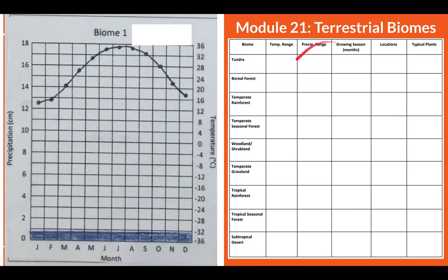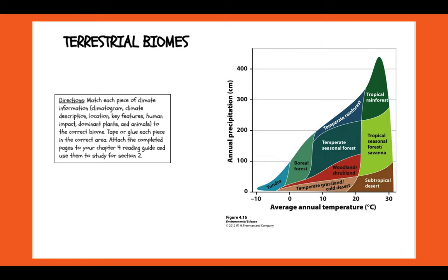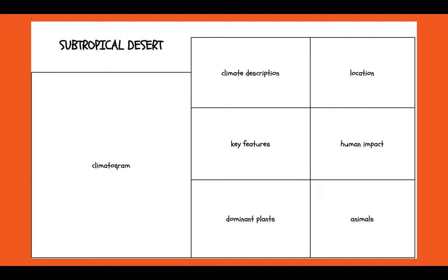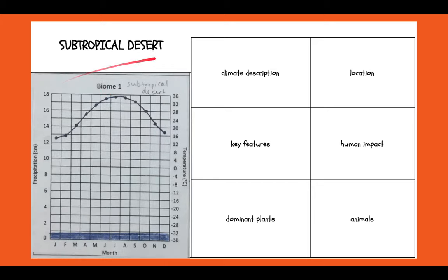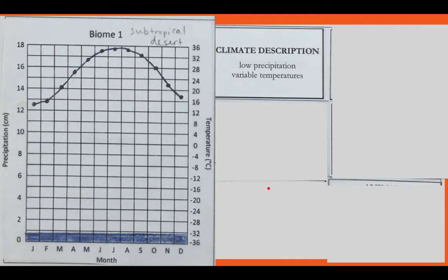So taking your climograph from biome one, as well as your data from module 21, terrestrial biomes that you already read, you would be able to take your book, match up your data. You just did the climograph. So you're going to cut that out. You're going to paste it there. And then for each climate description, key feature, and so on, you're going to go through and match them up.